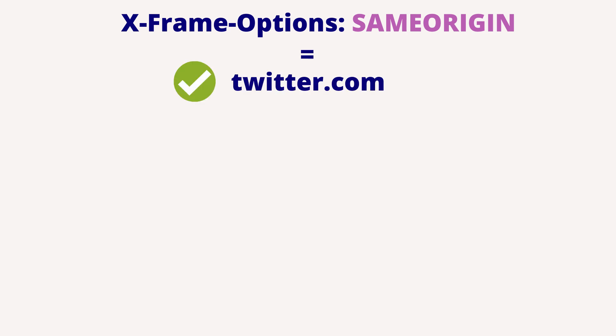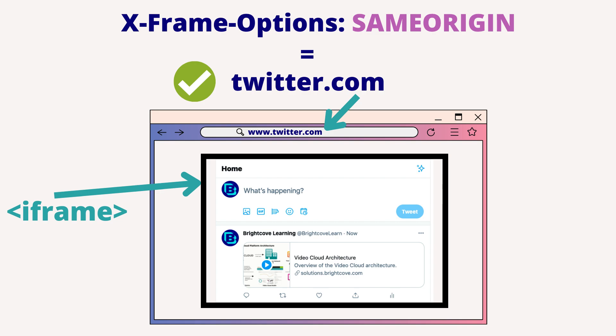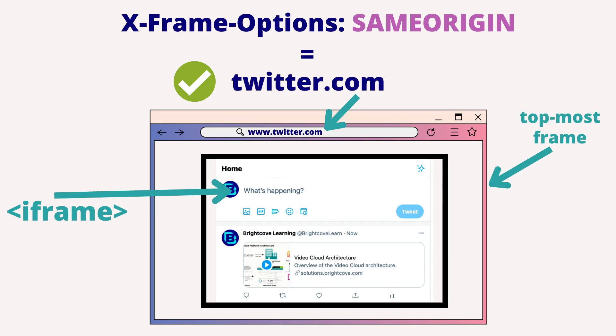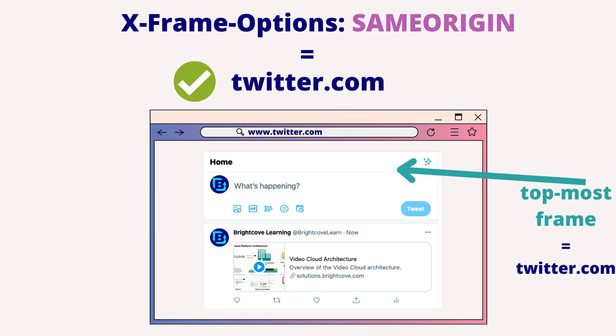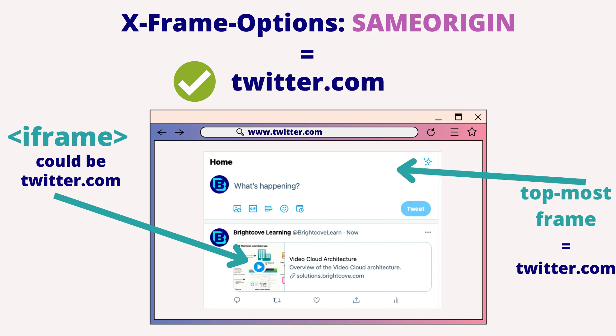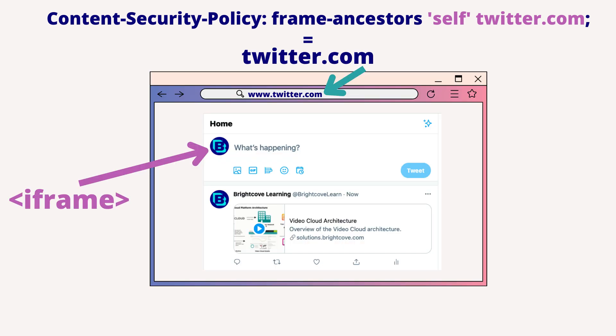Twitter had some protections which disallowed just anyone from framing their site. The X-Frame-Options header was set to same-origin, which meant that only twitter.com domains could iframe the site. Same-origin only checks if the origin of the frame matches the origin of the topmost window. So the player card feature on Twitter allowed an attacker to bypass this protection, as the origin of the topmost window would always be twitter.com.